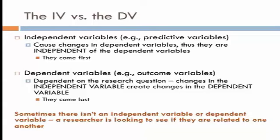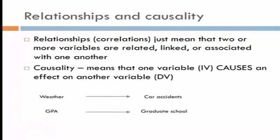Dependent variables depend on changes in the independent variables. The dependent ones are dependent upon something; independent are not — they're just out there. That helps keep them straight. If you're conducting correlations, it just means that two variables are related. But you can't establish causality with just a correlation — you have to conduct the correct type of statistical analysis. Causality simply means one variable has an effect on or causes something in another.